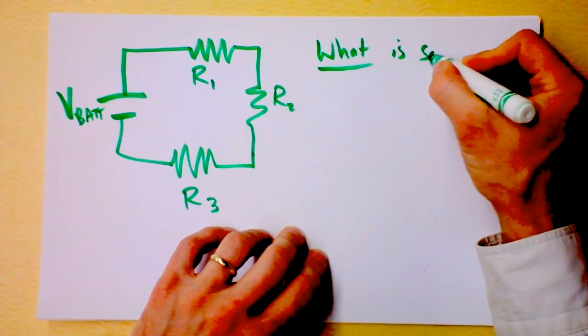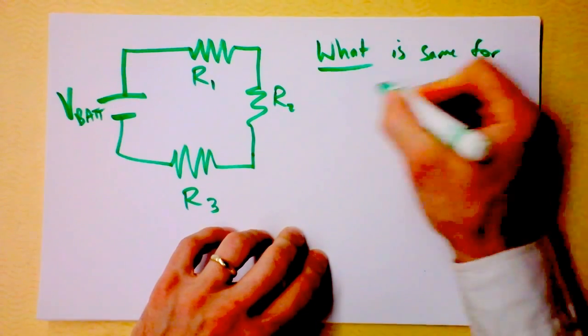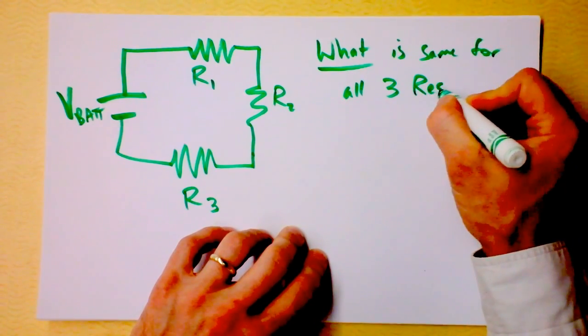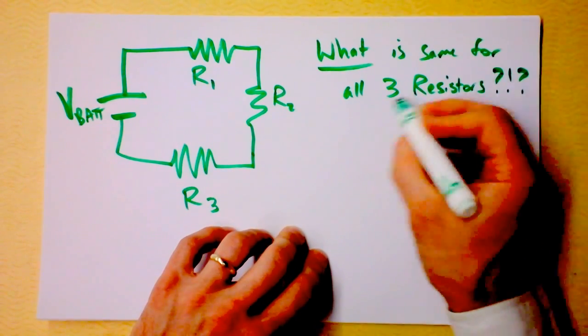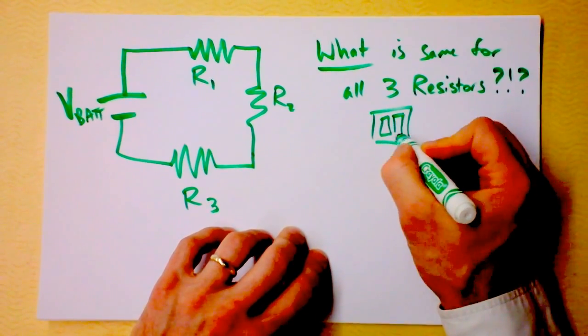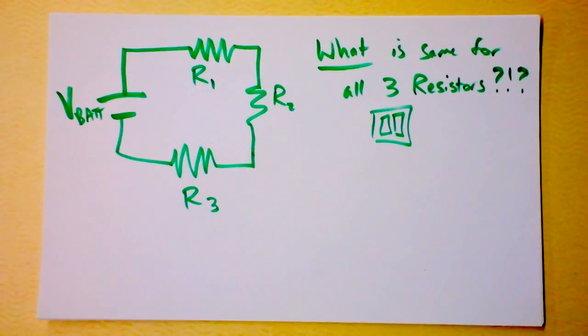what is the same for all three resistors? These resistors are experiencing one thing that is the same, and I want you to find out what it is. So, pause, figure it out. I'm seriously not going to go on until you think about it. What is the same for all three resistors? You thought I'd just go on, did you? No. What is the same for all three resistors? Figure it out. I'm really not going to tell you, you have to figure out what is the same for all three resistors.